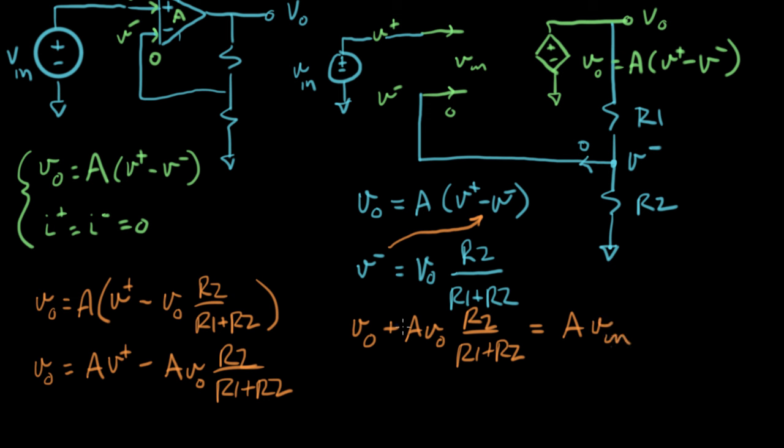So that gives me V out plus A V out times R2 over R1 plus R2, and that equals A times V plus. And actually I can change that now. V plus is V in.